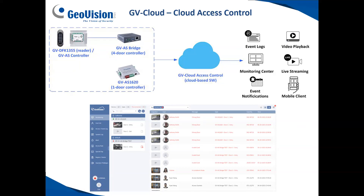With the AS2120 and the AS4111, you can also connect them to the cloud, but you need the GV-AS bridge. That gives those two controllers cloud connectivity and allows them to be managed in the cloud. You can use a combination of both — an AS1620 going straight to the cloud alongside other controllers using the AS bridge. You can use any GeoVision access control reader with these control panels, and there would be a monthly fee per door associated with this solution.